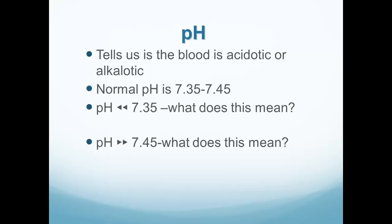The pH tells us if the blood is acidotic or alkalotic. If the normal pH is 7.35 to 7.45, then a pH less than 7.35 is acidotic — a low pH is acidotic. A pH greater than 7.45 is the opposite, which is alkalotic.